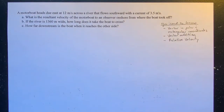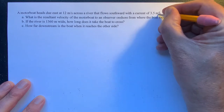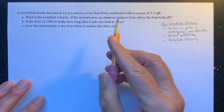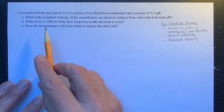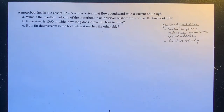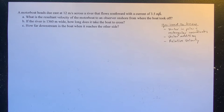So let's look at the problem. We have a motorboat that heads due east at 12 meters per second across a river that flows southward with a current of 3.5 meters per second. We want to know: what is the resultant velocity of the motorboat to an observer onshore? And if the river is 1,360 meters wide, how long does it take the boat to cross? And how far downstream is the boat when it reaches the other side?